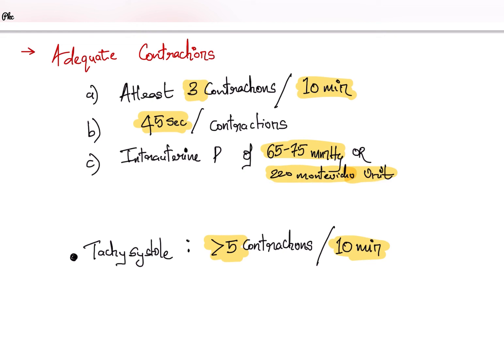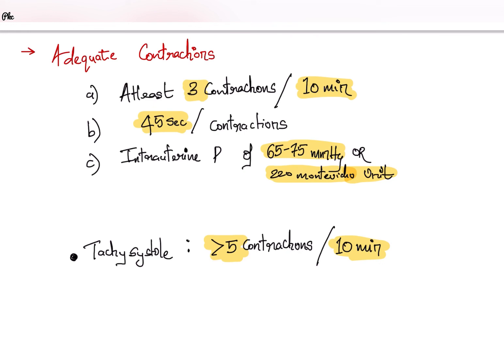There is a term called tachysystole, which refers to more than 5 uterine contractions in 10 minutes. This is found to cause fetal distress.